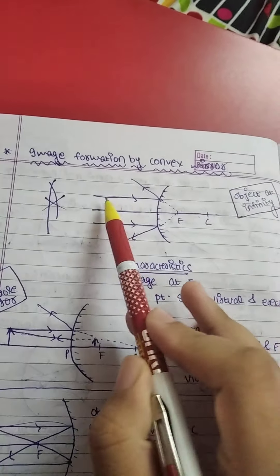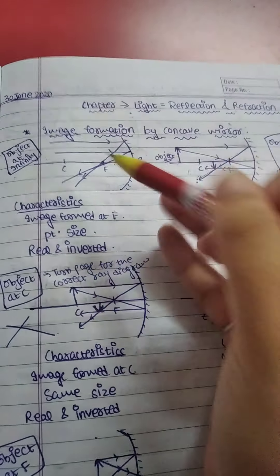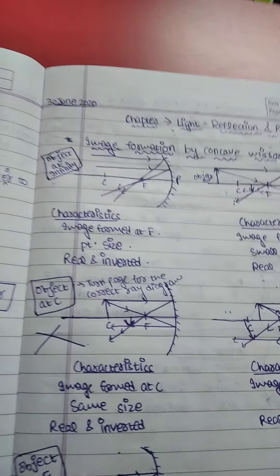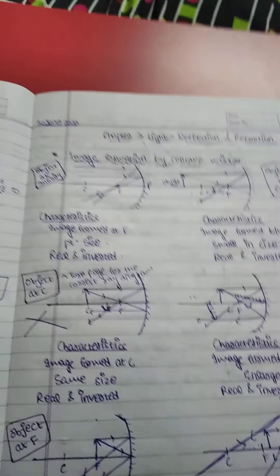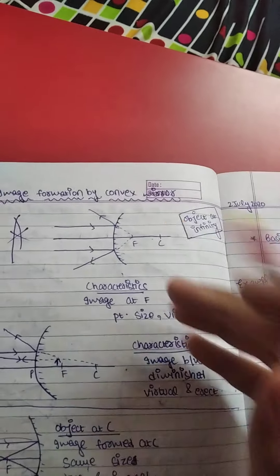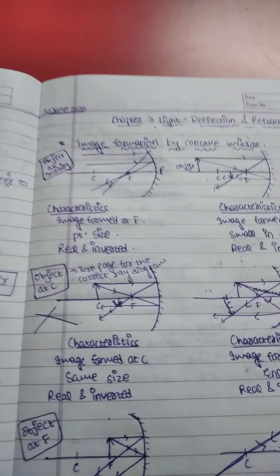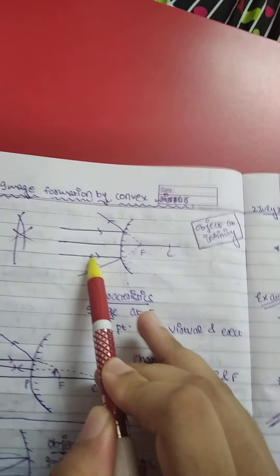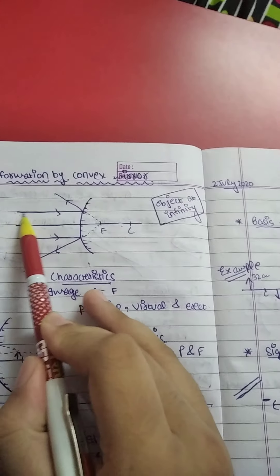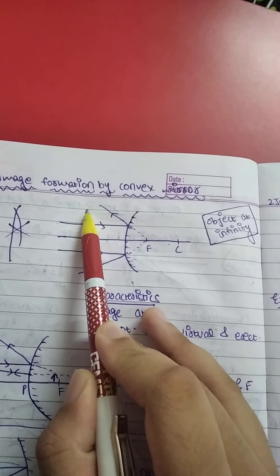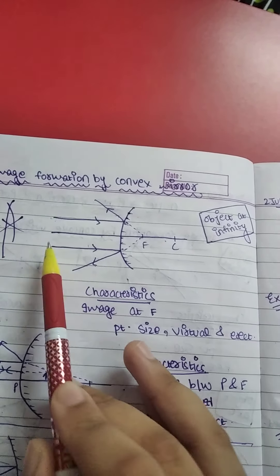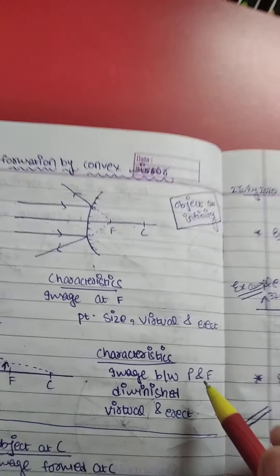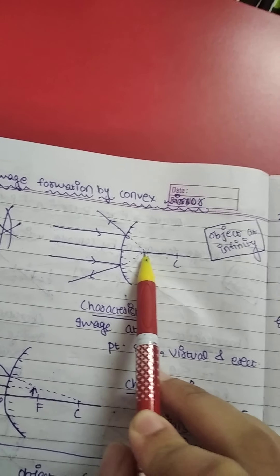This is our convex mirror. Unlike our concave mirror which is on the left side, our convex mirror is on the right side. We need the light ray parallel to the principal axis and it will reflect back, but now we can't do both of them directly, so we extend their backward extension and meet them.